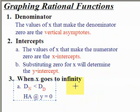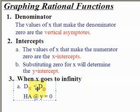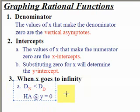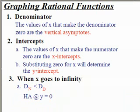We covered degrees in polynomials. Now we're going to compare the degrees. When the degree of the numerator is less than the degree of the denominator, there will be a horizontal asymptote at y equals zero. I'll prove this in class, but for now we're going to accept this fact.